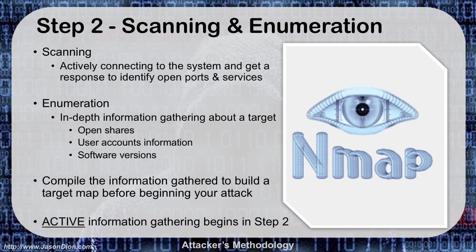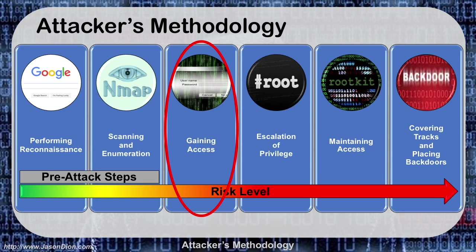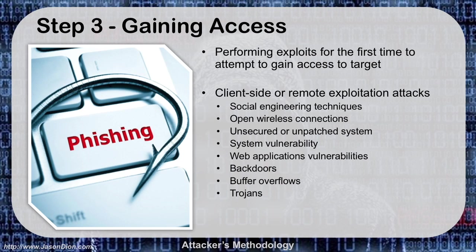Here in step two, this is the first time we do active information gathering. Step one was completely passive — never touching the victim systems. In step three, we're going to move on to gaining our access. We're going to perform our exploits for the first time; this is where we actually try to get into the system.